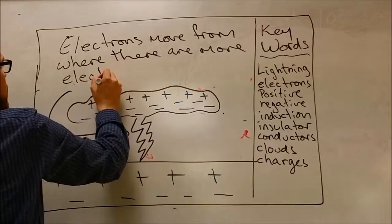There are more electrons in the bottom of the cloud than on the top of the ground, and that is how lightning works.